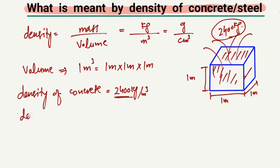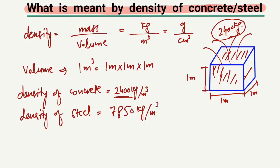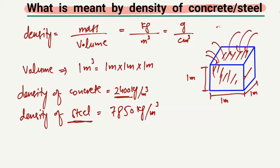Similarly, the density of steel is equal to 7850 kilogram per cubic meter. It means that the weight of steel in one cubic meter volume is equal to 7850 kilograms. That amount of steel comes into one cubic meter volume, so we say the density of steel is 7850 kilogram per cubic meter.